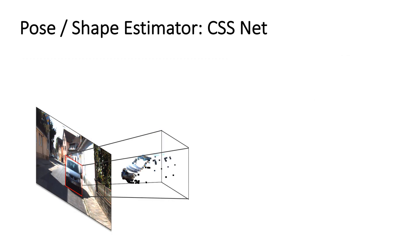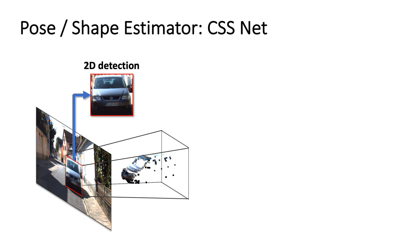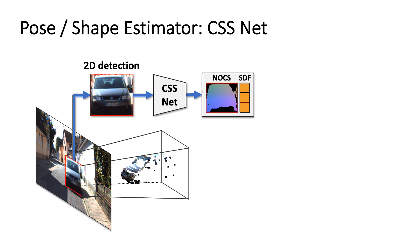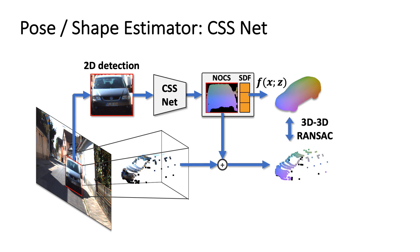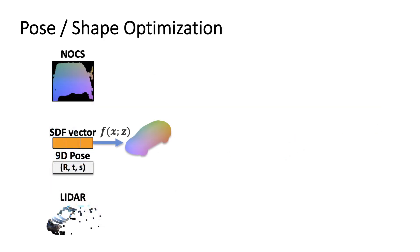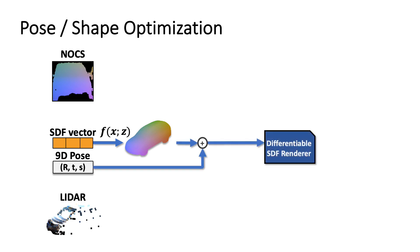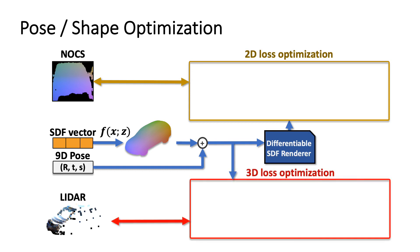We introduced the coordinate shape-space (CSS) network to regress initial pose and shape estimates. Off-the-shelf 2D detections are fed into our CSS network to predict normalized surface coordinates (NOCs) and an SDF latent factor used to recover the object shape. We back-project the coordinates to LIDAR in the camera frustum, and then establish 3D-3D correspondences between the scene and model to estimate an initial pose transformation. Given the initial pose and shape estimates, we transform the predicted object and use it to iteratively refine the estimate through differentiable visual and geometric alignment.